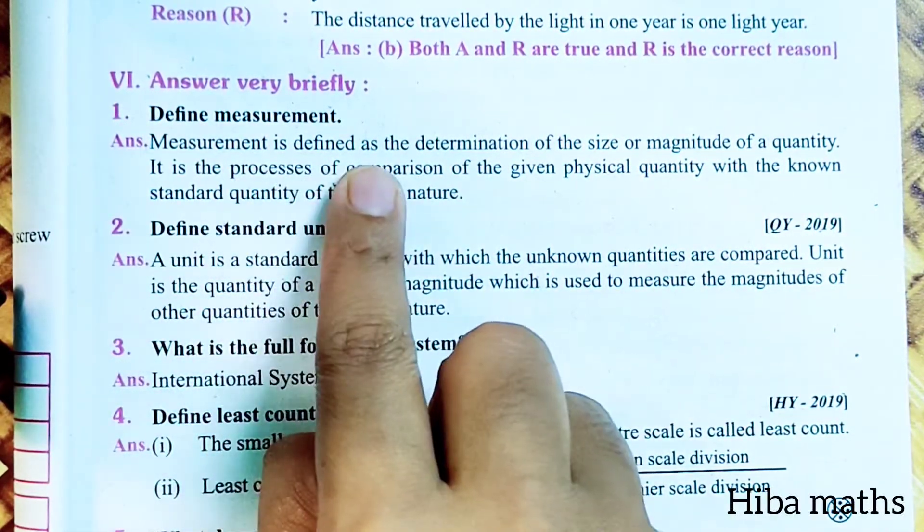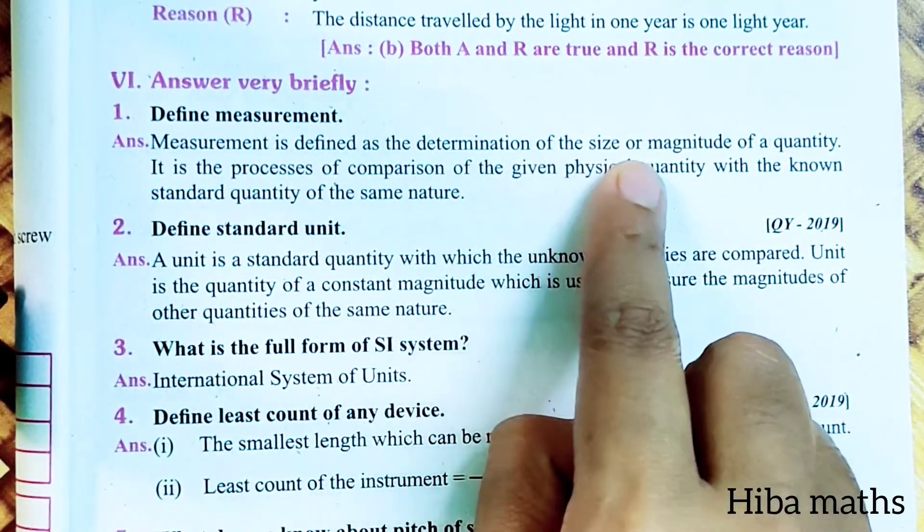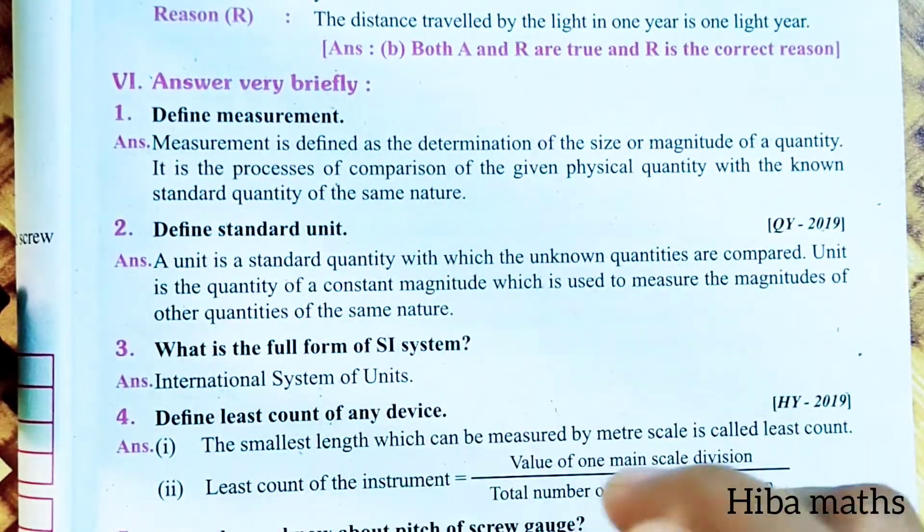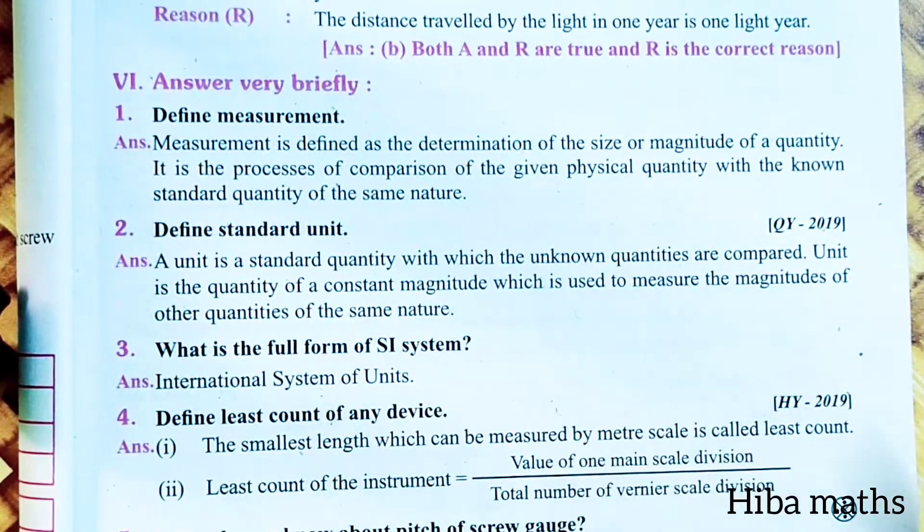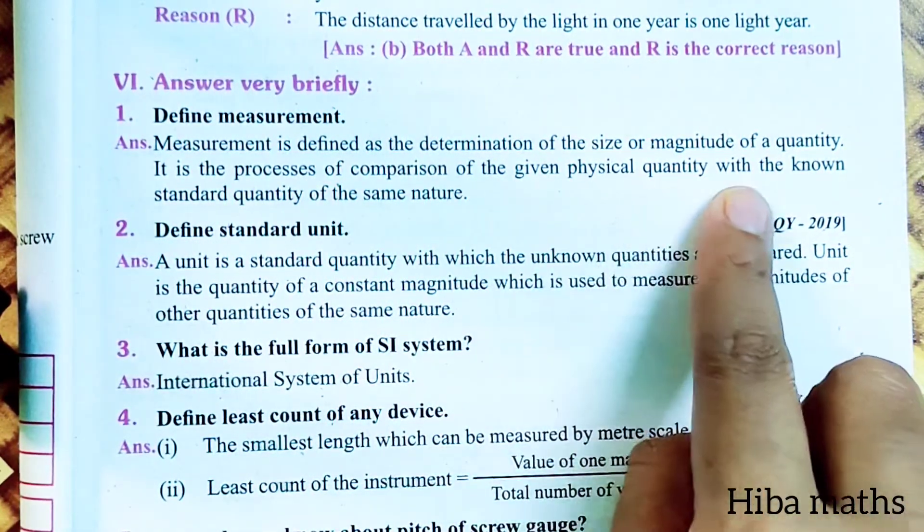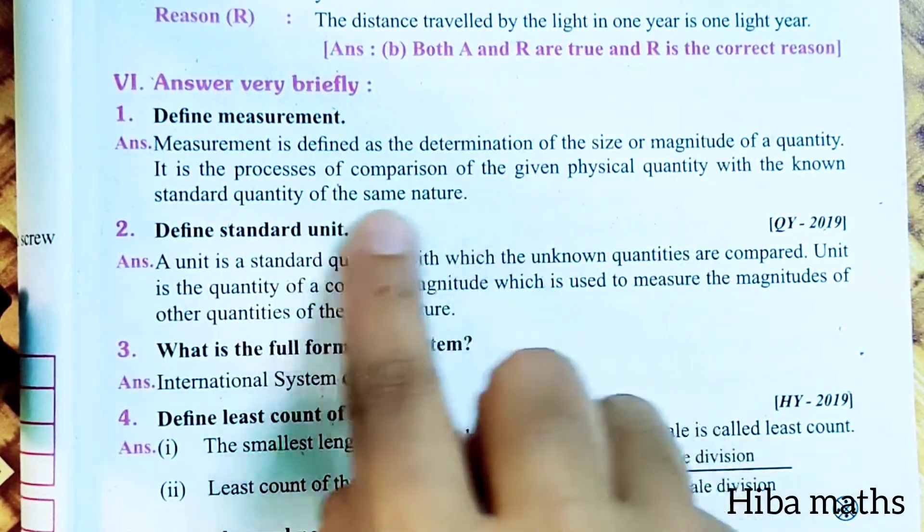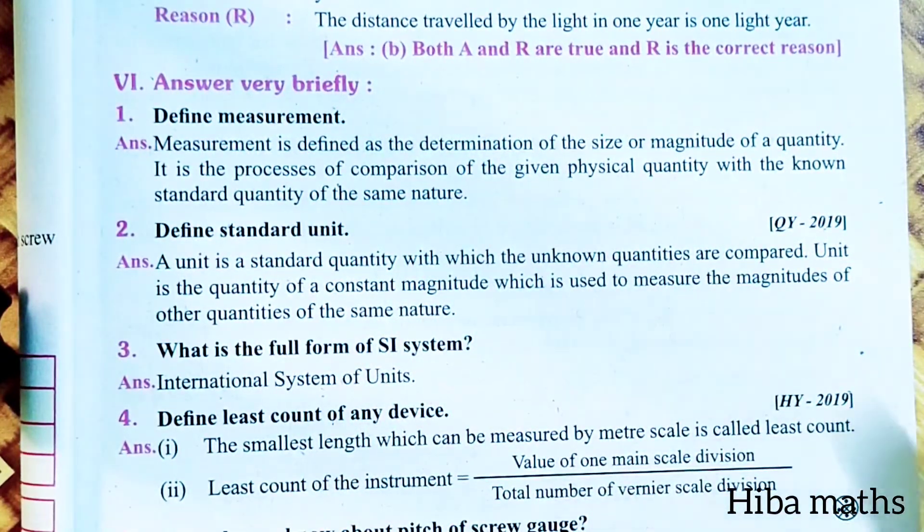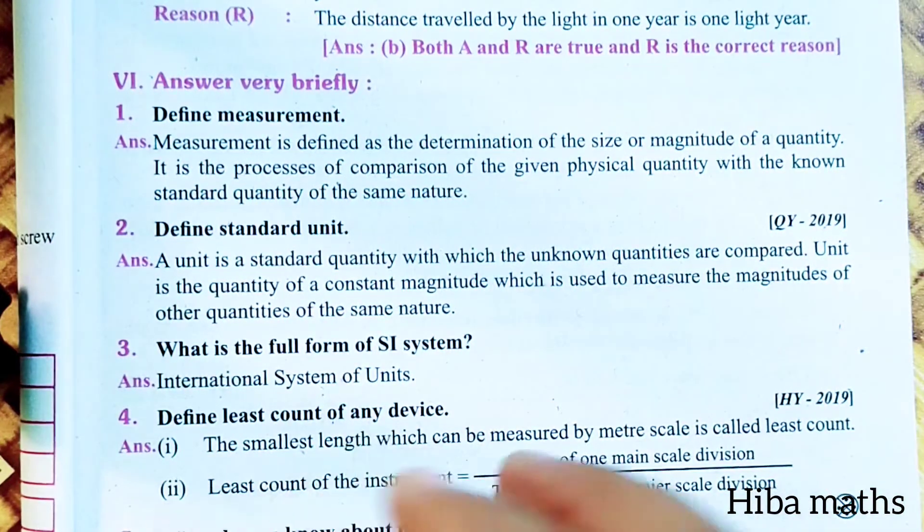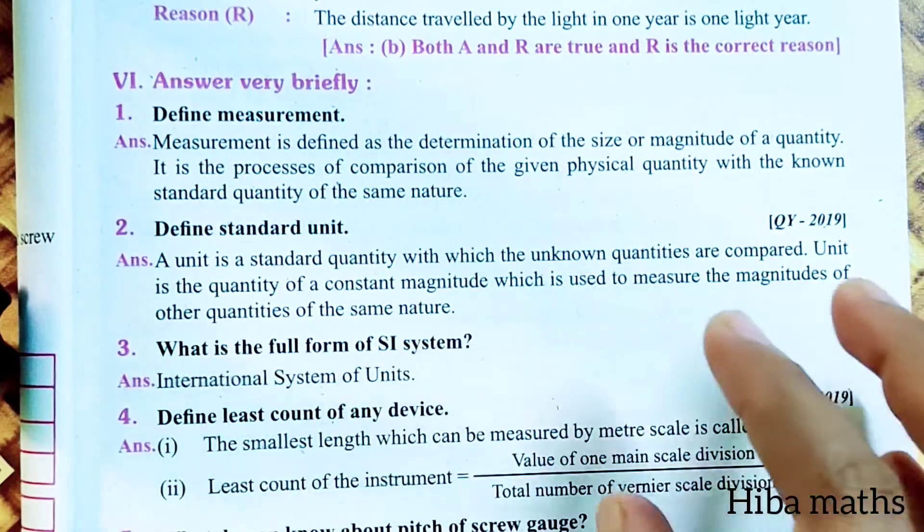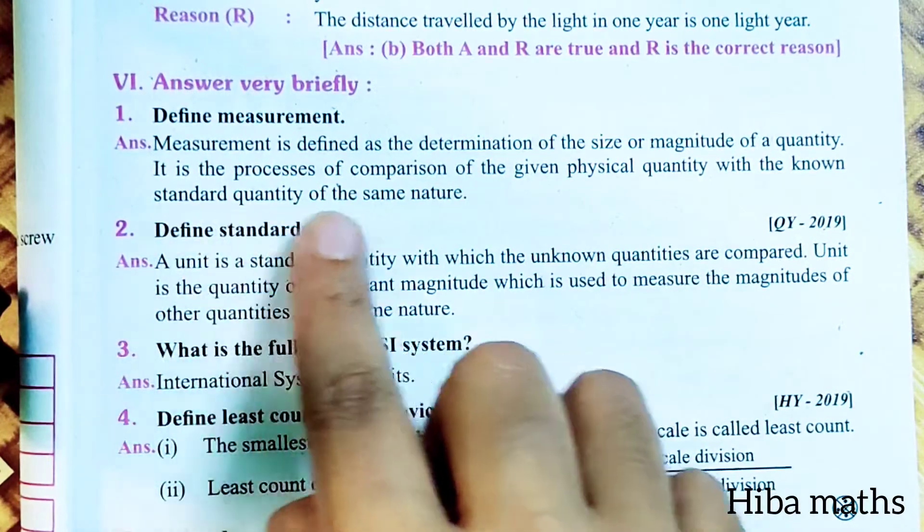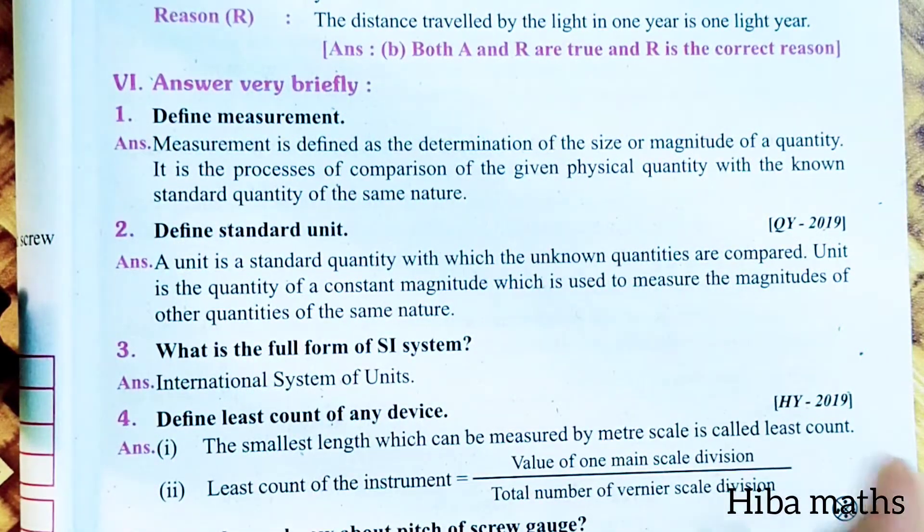Measurement is defined as the determination of the size or magnitude of a quantity. The quantity of a substance is determined by the size or weight. It is the process of comparing the given physical quantity with the known standard quantity of the same nature. For example, if you put sugar in your hand, it will be equal to 1 kg. We know that known standard quantity of 1 kg is equal to 1 kg.